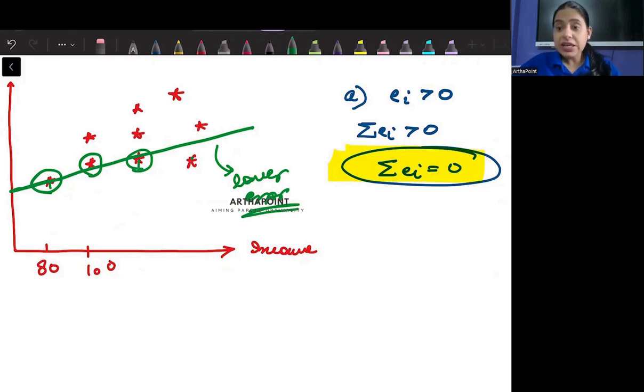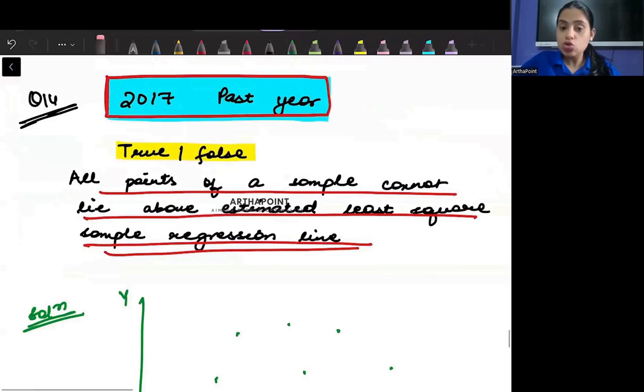So, in fact, it is correct that if I keep moving the line upward and I try to pass it to some of the points, I may be able to lower the error term. Right. So there is no reason why the line must be passing through below when it can actually pass from these points and be able to lower the error. Right. So this statement is true that it should not, it cannot. This is correct. This is true.